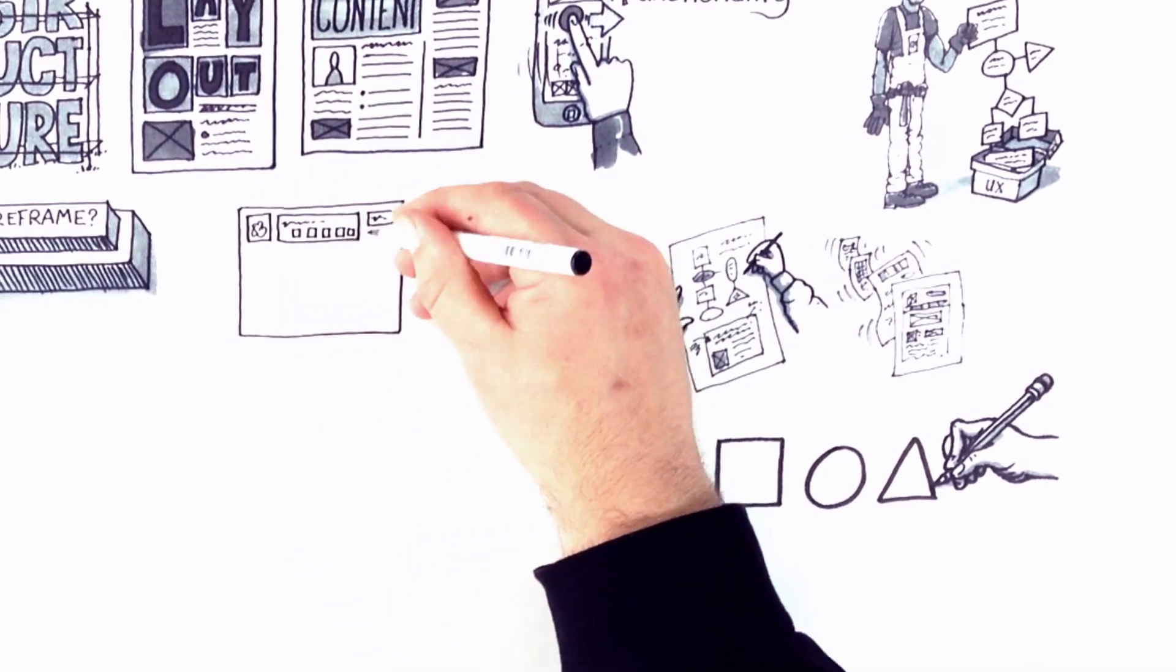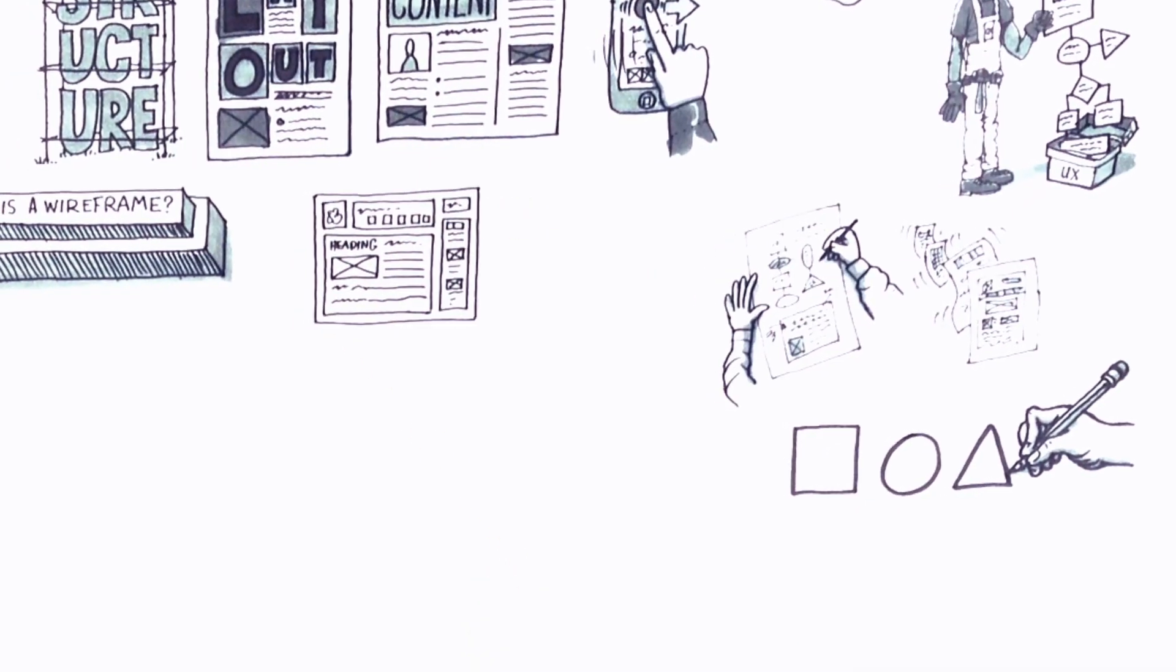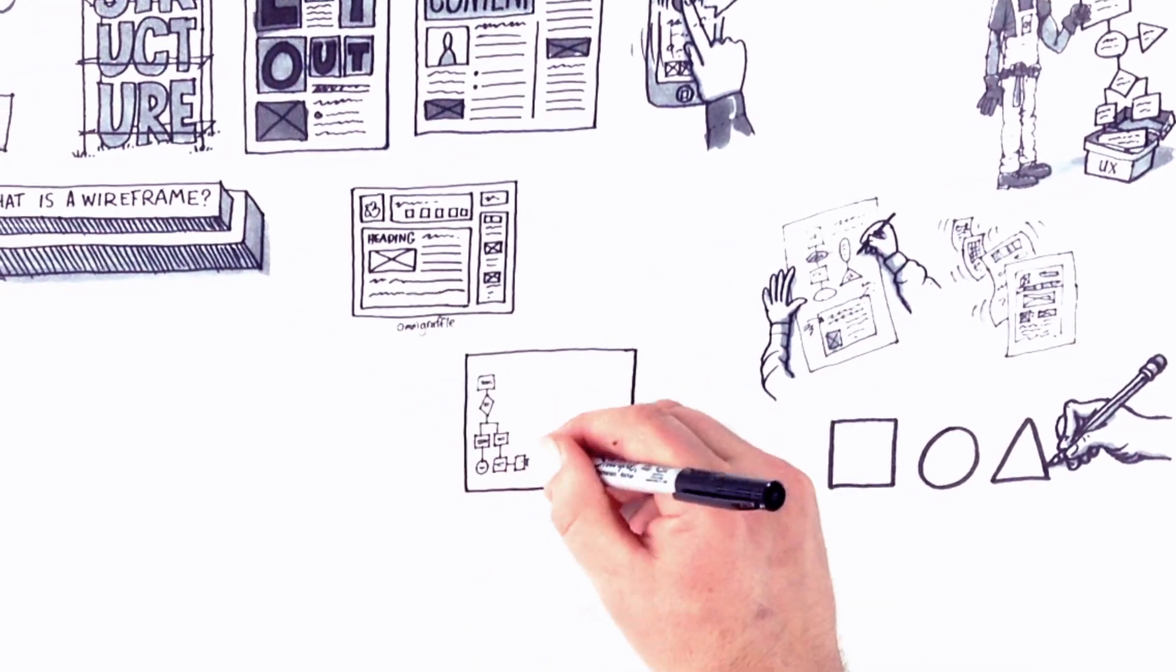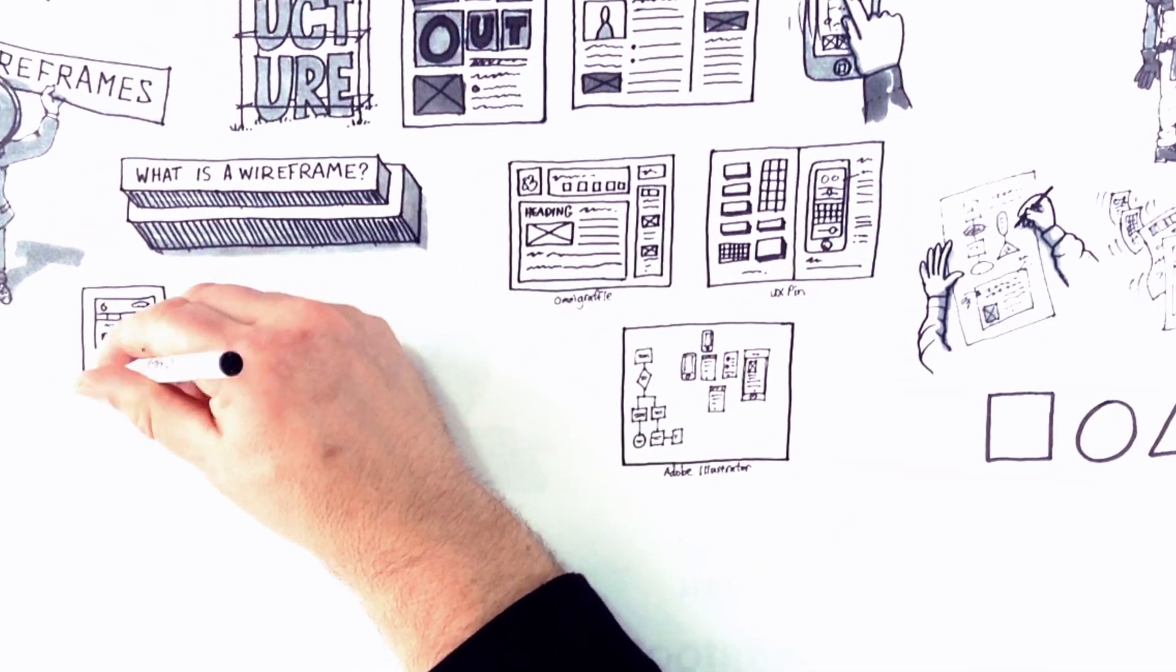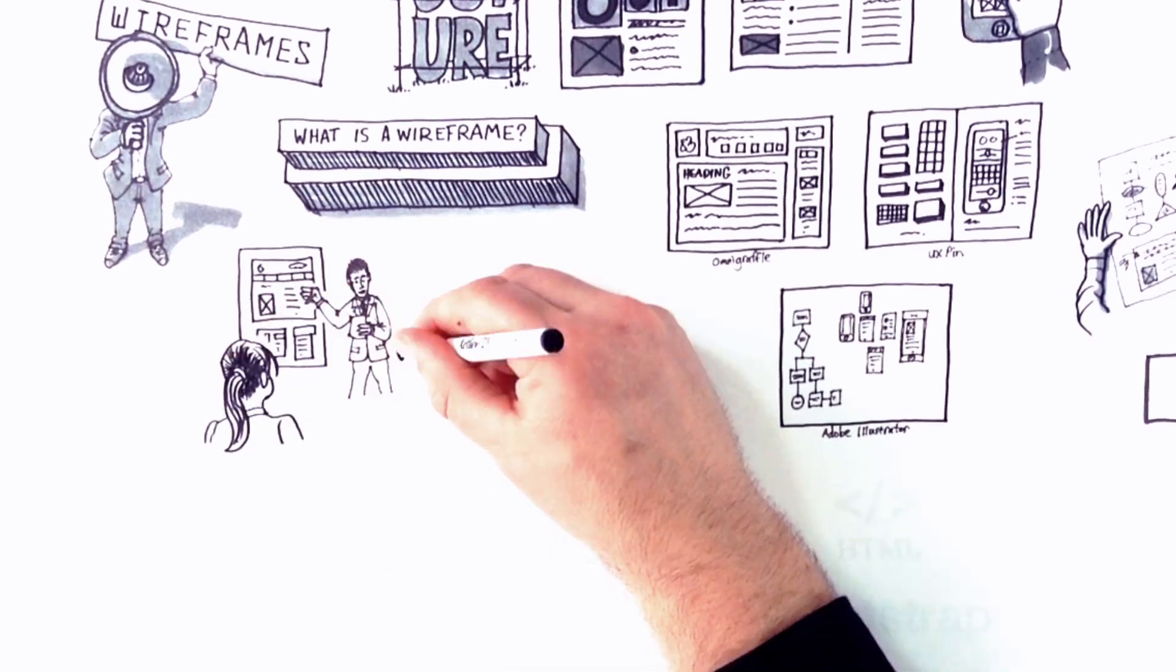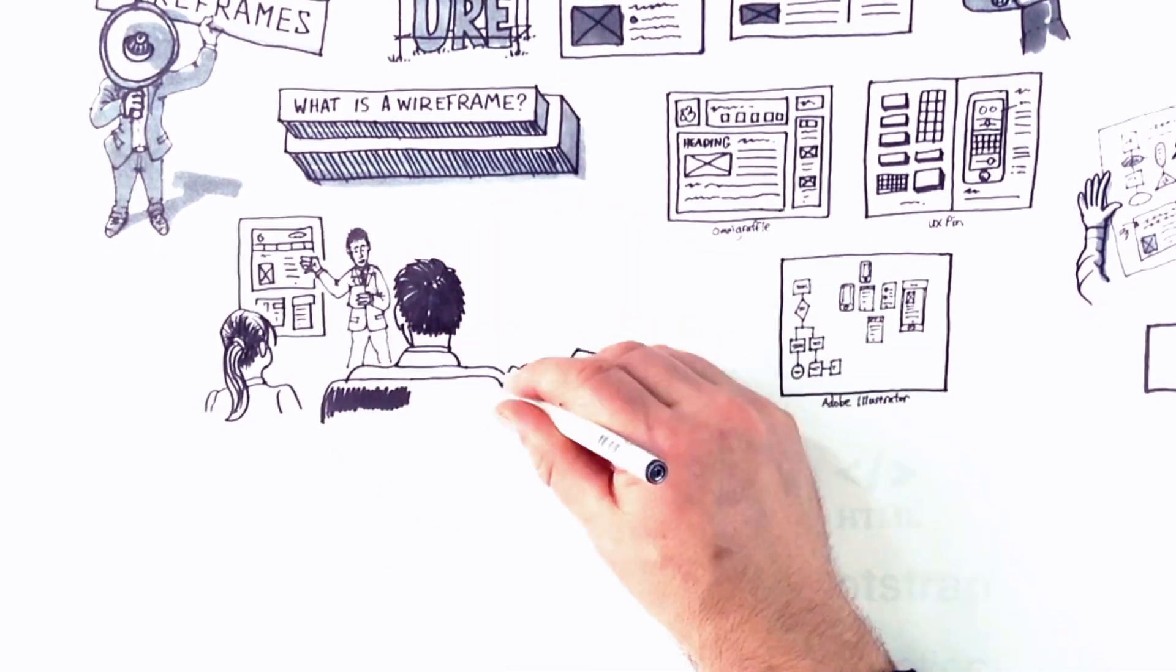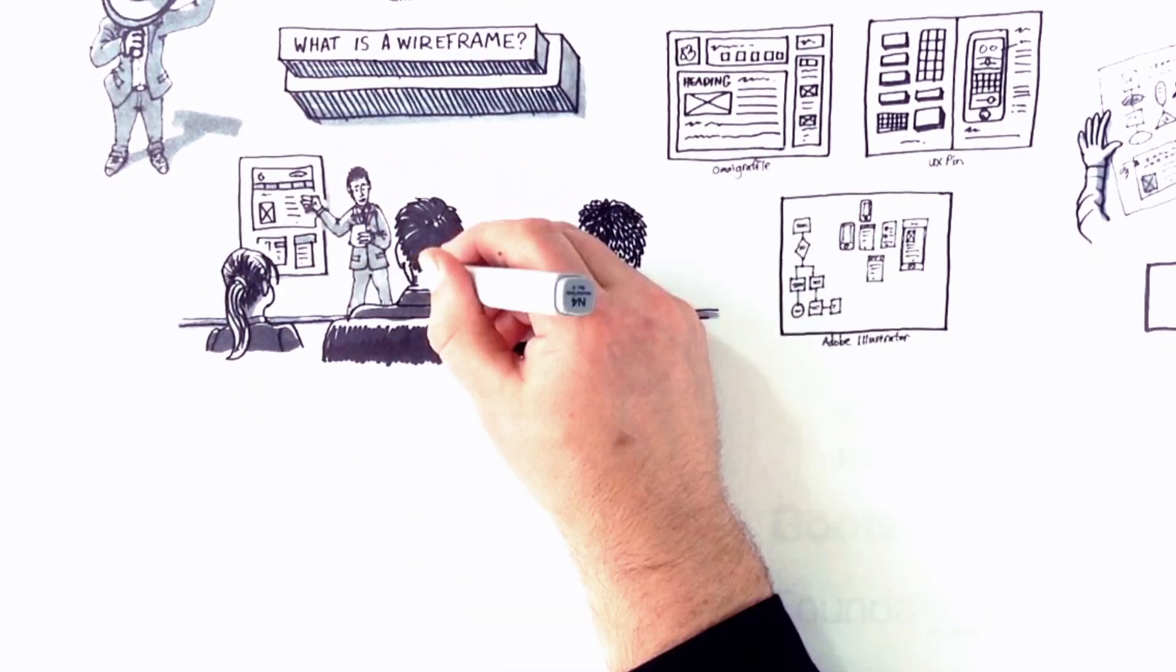Next, we have the more traditional wireframe. Now there are literally hundreds of tools that we can use to create these, but Balsamiq, OmniGraffle, Illustrator, and UX Pin are just some of these. Wireframes like this allow you to communicate your idea to your team, your clients, and your stakeholders. They can be very useful to explain your product and exactly what you're building.